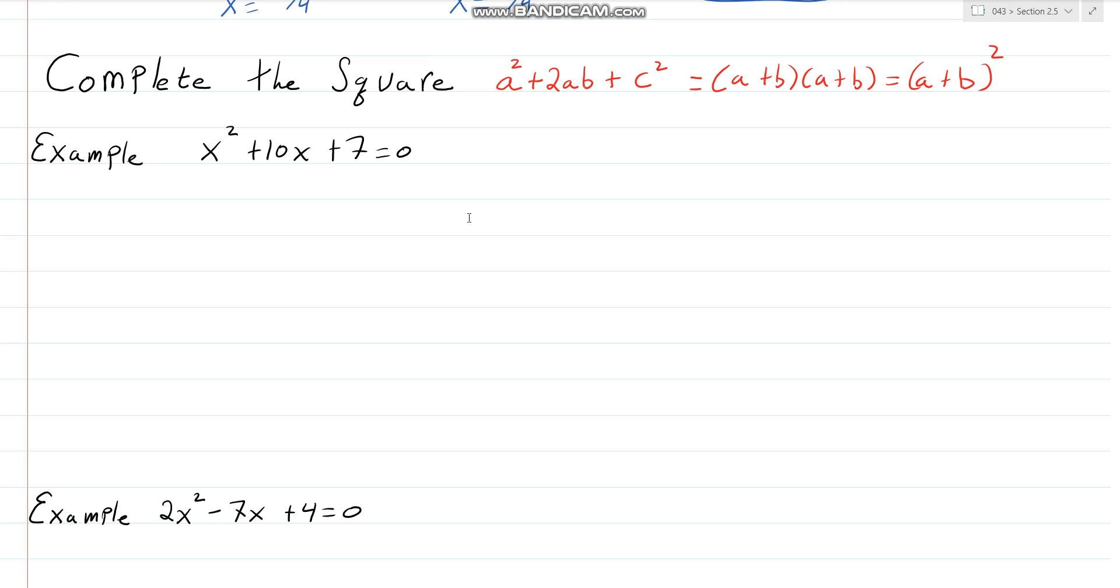First, I want to show you why we need a new technique to solve something like this. This is a leading coefficient of one problem, so I need to find the factors of 7 which would add to 10. The factors of 7 are 7 and 1, which add to 8, so that's not it. I don't think there are factors of 7 which would add to 10.